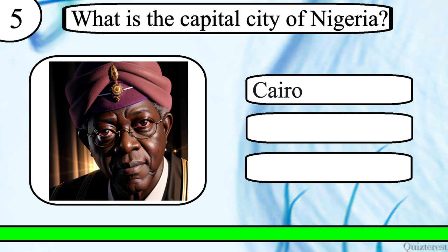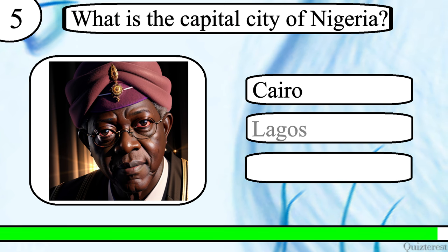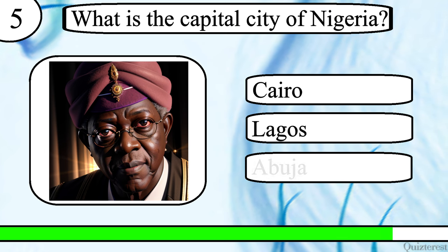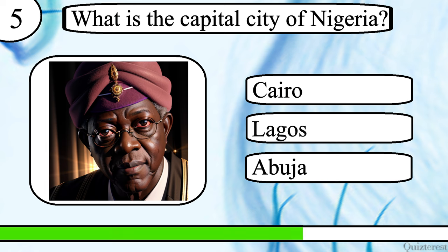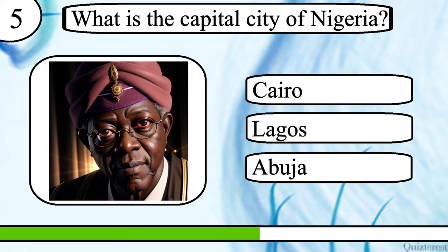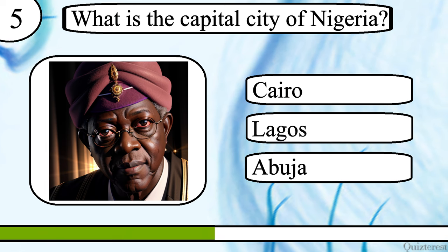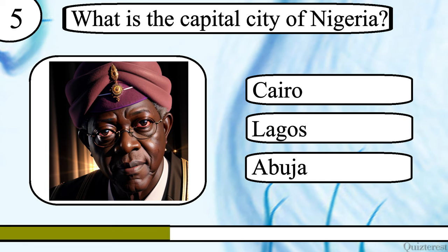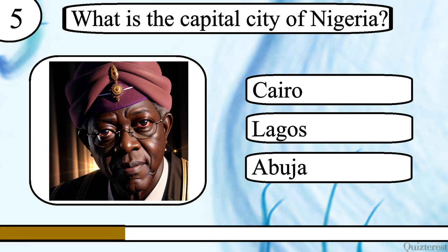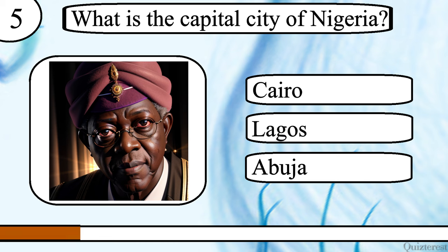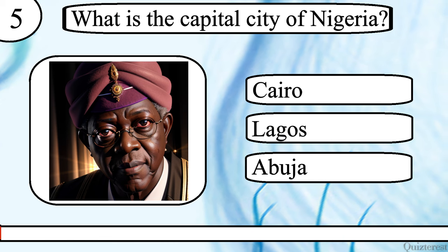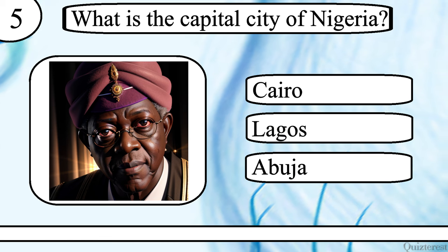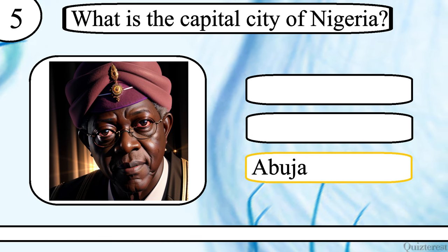Question 5. What is the capital city of Nigeria? Cairo, Lagos, or Abuja? The correct answer is Abuja.